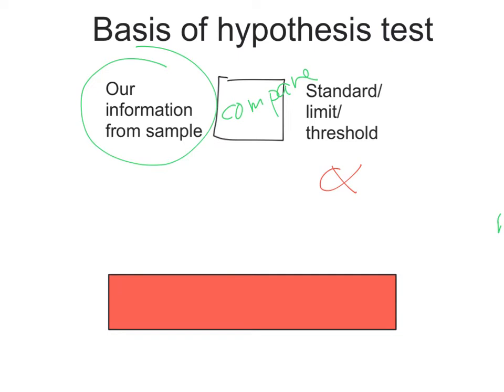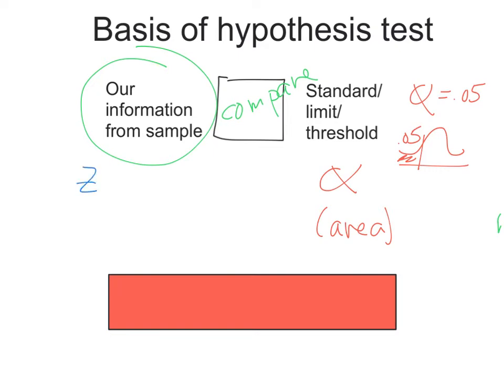It's important to note that alpha comes from an area. For example, when we said something's unusual if it's 0.05, that means the area under the normal curve was 0.05 or less. So alpha is an area under the normal curve. The information we get from a sample is always going to be a z-score — or, for a small sample, a t-score — so these are called cutoff values.